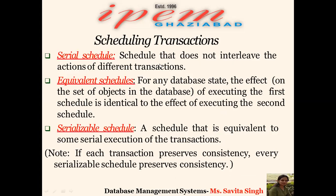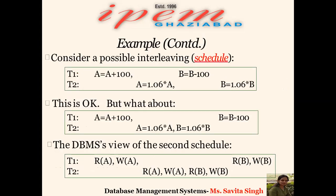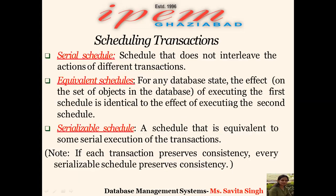First is serial schedule. Serial means we perform one operation completely and then start the second operation. A schedule that does not interleave the actions of different transactions is known as a serial schedule — one transaction fully completes all its operations before the next transaction begins.